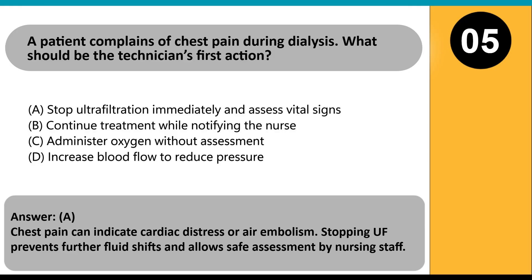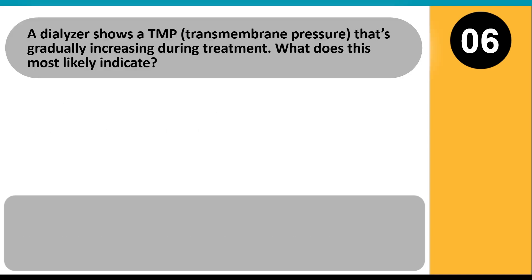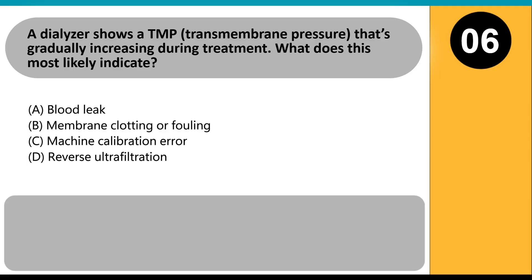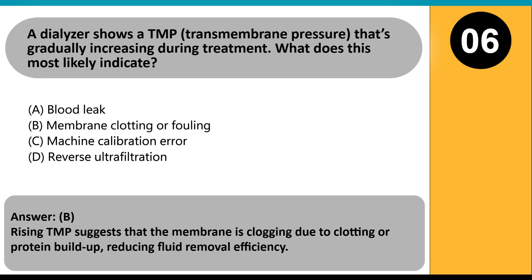Stopping UF prevents further fluid shifts and allows safe assessment by nursing staff. A dialyzer shows a TMP (transmembrane pressure) that's gradually increasing during treatment. What does this most likely indicate? A. Blood leak. B. Membrane clotting or fouling. C. Machine calibration error. D. Reverse ultrafiltration. Answer B. Rising TMP suggests that the membrane is clogging due to clotting or protein buildup, reducing fluid removal efficiency.